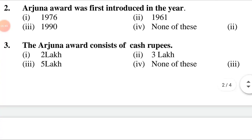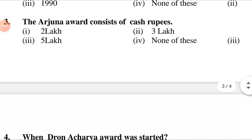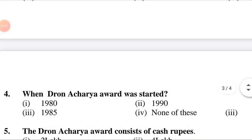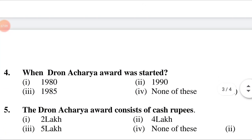The Arjuna Award consists of cash rupees. First option: 2 lakh. Second option: 3 lakh. Third option: 5 lakh. Fourth option: none of these. The answer is 3rd option, 5 lakh.